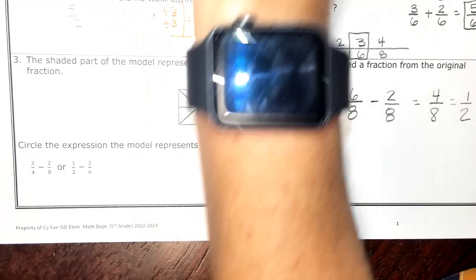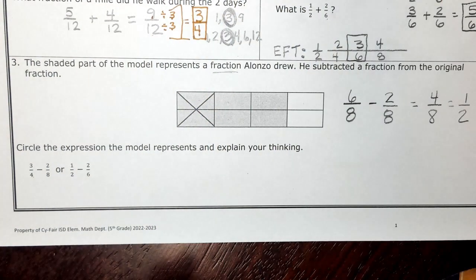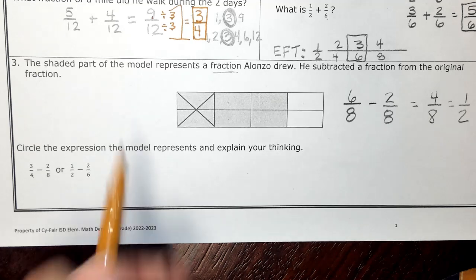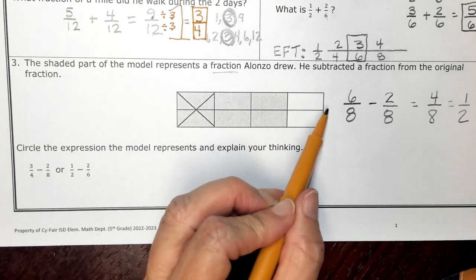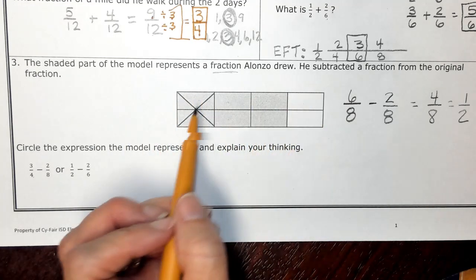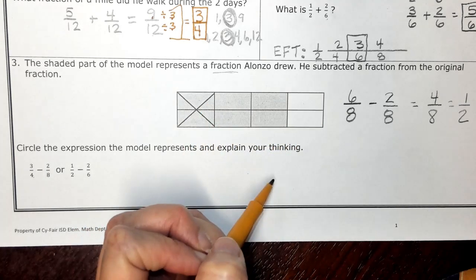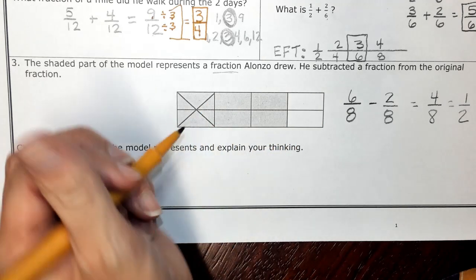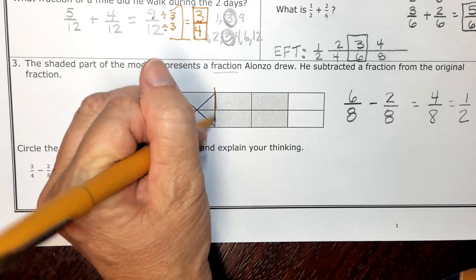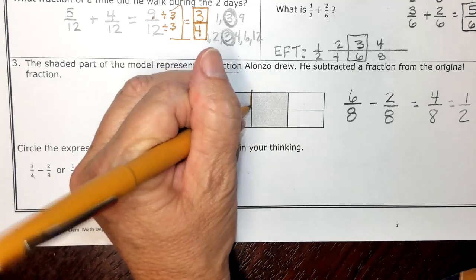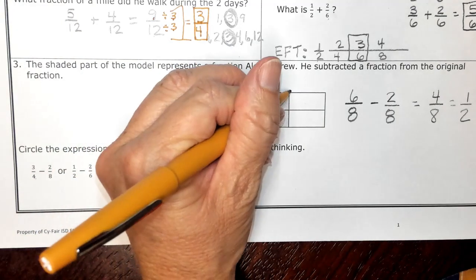So if I had eight equal pieces here, and six of them are shaded, I'm going to take those vertical lines. I'm going to kind of outline them with my pen. And I'm looking for another fraction name.